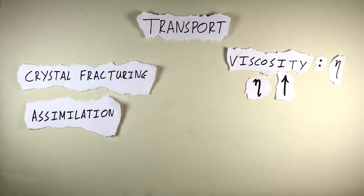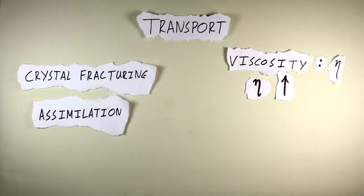Another process is assimilation. This occurs as the high-temperature magma melts plate rock as it rises. This introduces rock with higher silicon contents into the magma, so the overall silicon percentage increases, thus increasing viscosity.